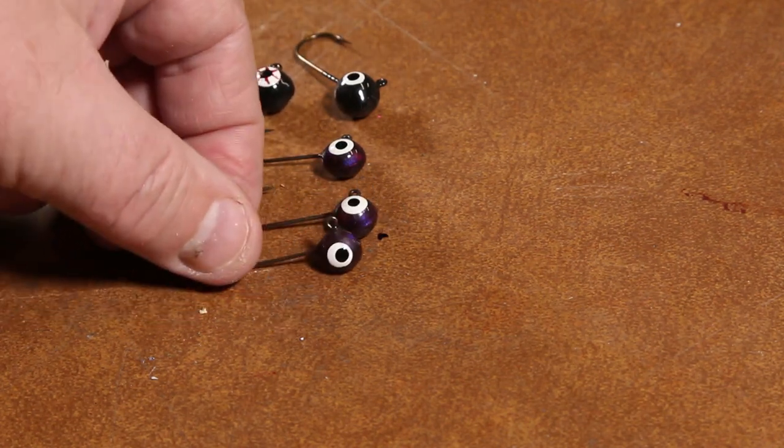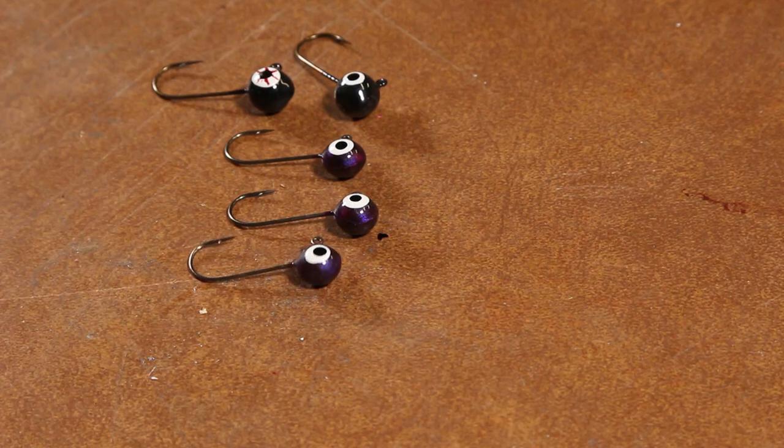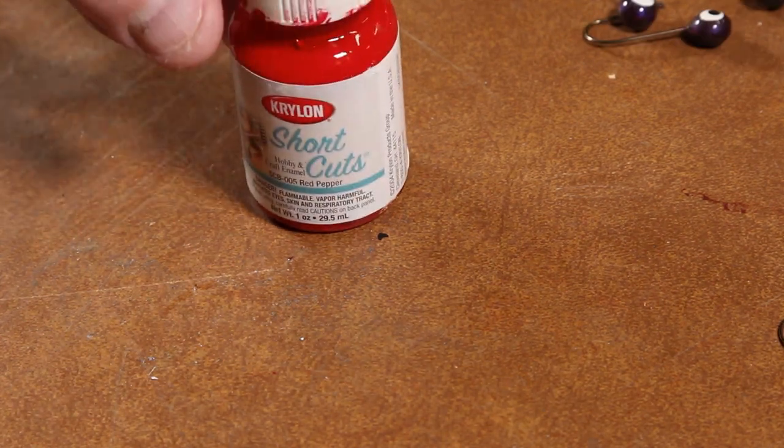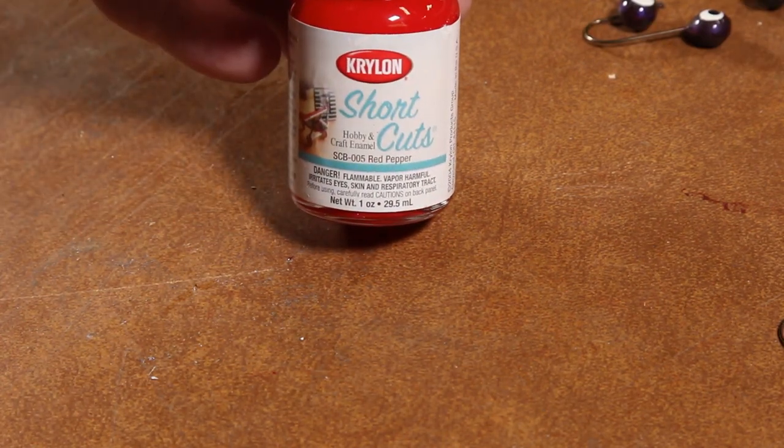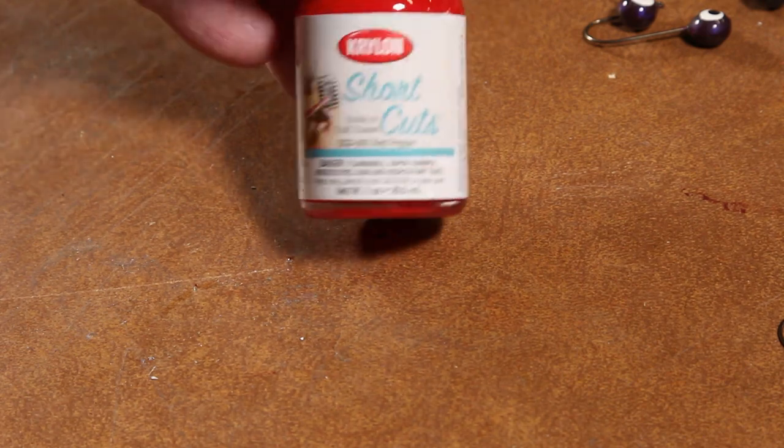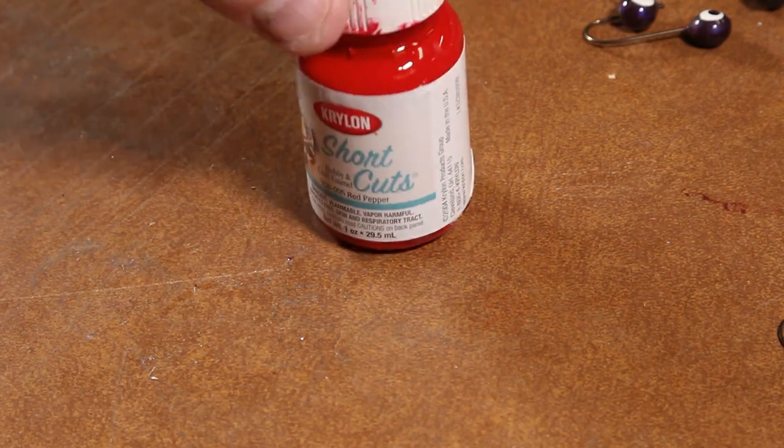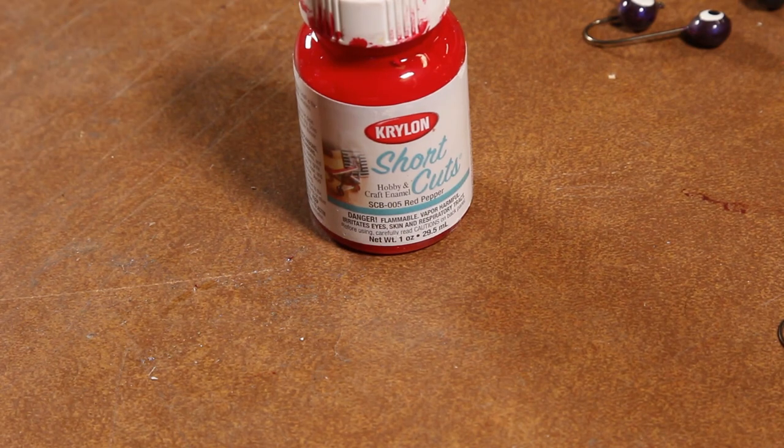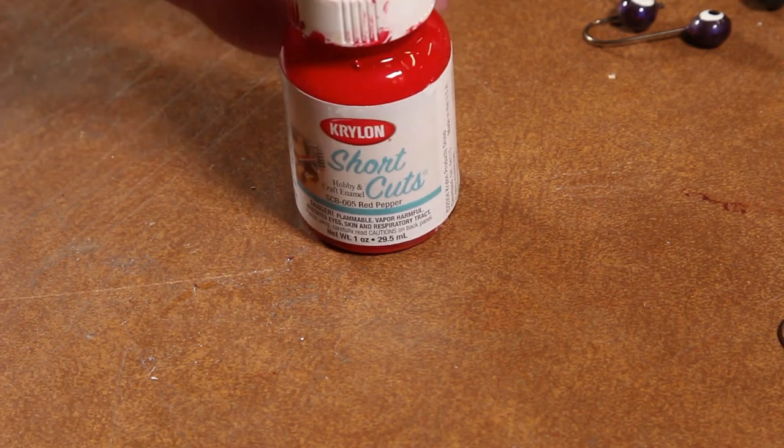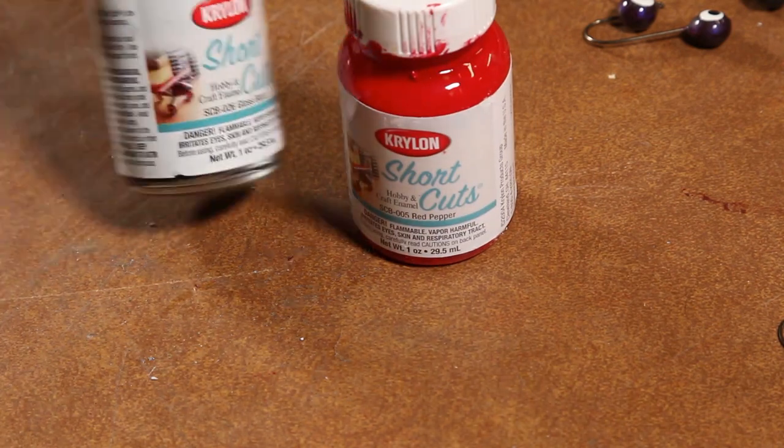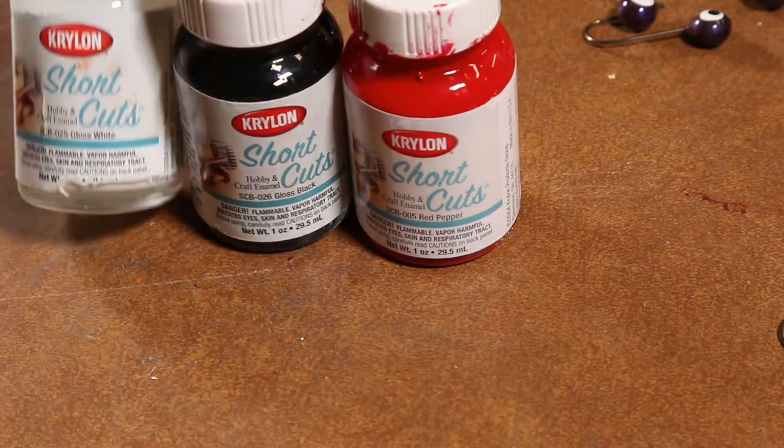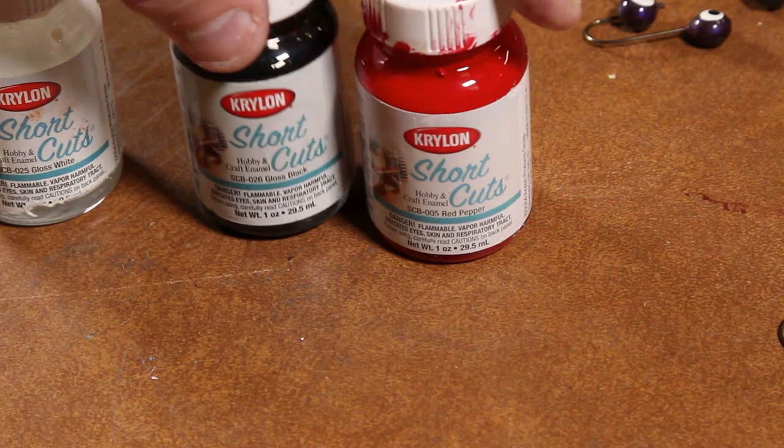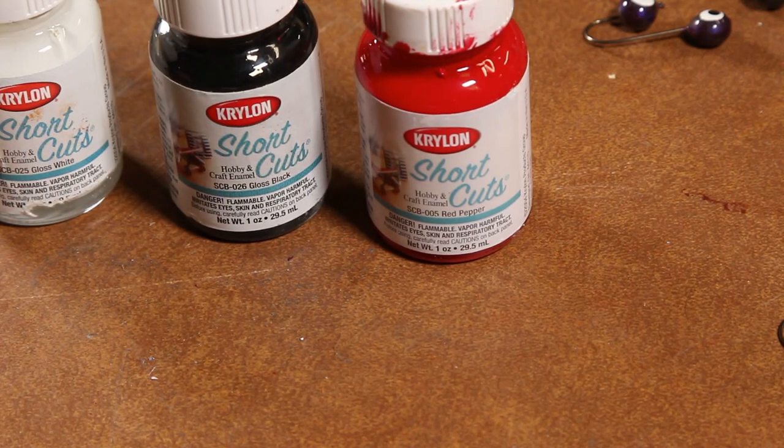The paint I like to use for doing eyes on jigs is this Krylon. You get it in little bottles called shortcuts. They're just basically a larger bottle of almost like model airplane paint, and they stick really well and dry really fast. I usually have them in red and black and of course white for the basic eye colors, but they make a wide variety of these colors that you can find in your local hardware store.